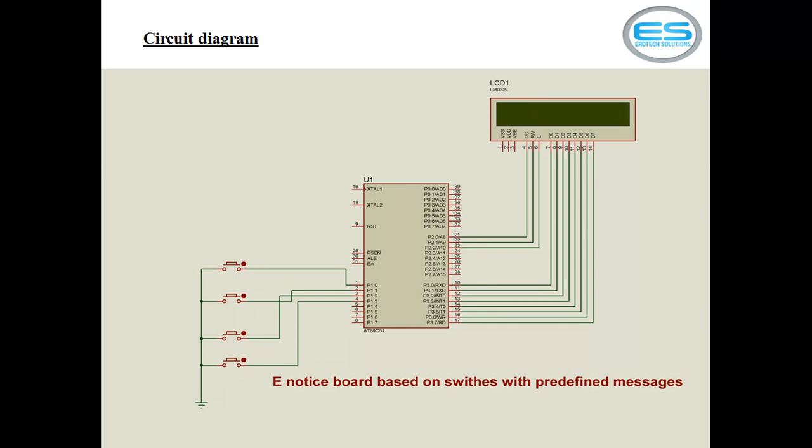The enable pin acts as a synchronization signal for the LCD screen. For every change of data, make sure the enable pin goes high to low once. For every change of command or change of data, you have to make sure the enable pin logic goes high to low once with some time delay. The remaining pins 7 to 14 are used to transfer your commands or data. This is the physical connection required between the microcontroller, switches, and LCD.